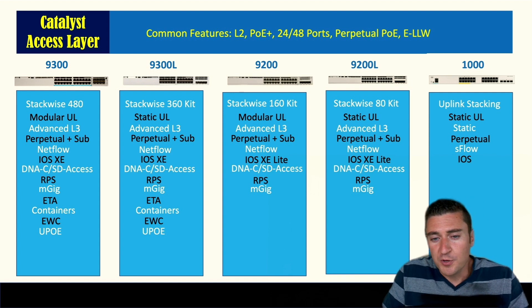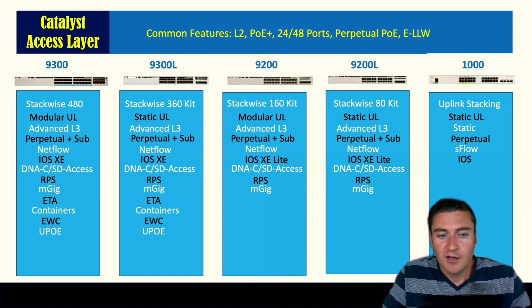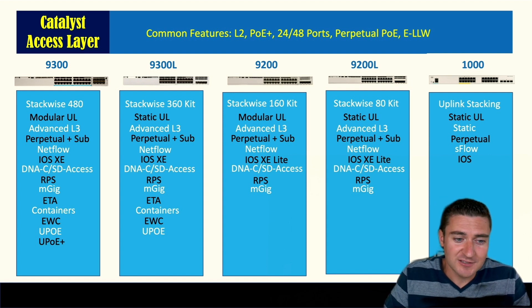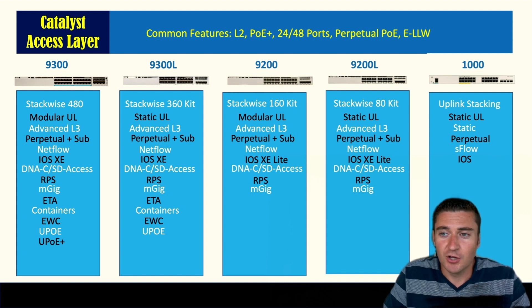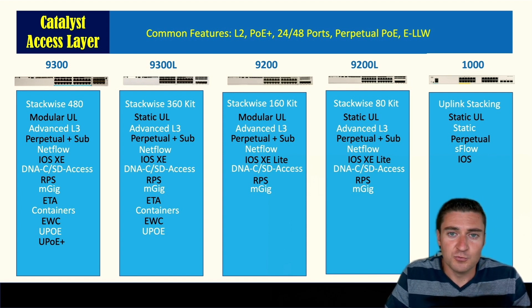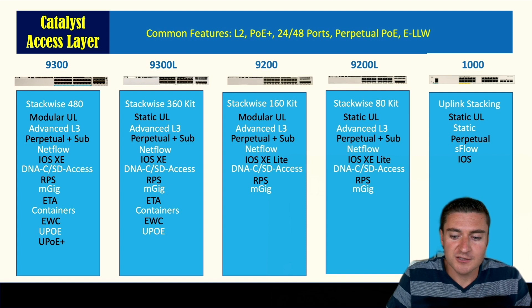Beyond PoE+, UPOE on the 9300 delivers 60 watts of power per switch port — useful for PoE lighting or powering monitors. Even more powerful is UPOE+, which gives 90 watts per port, also only on the 9300s. This is becoming a necessity for PoE lighting deployments where you're daisy-chaining lights and need to pull more than 60 watts.